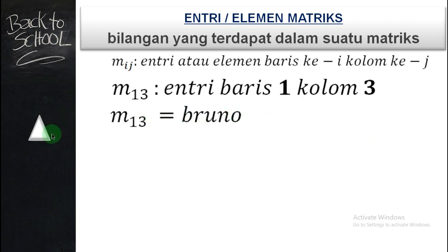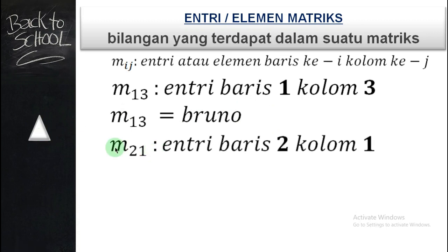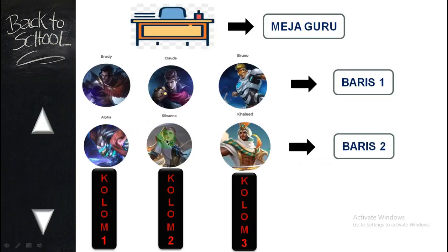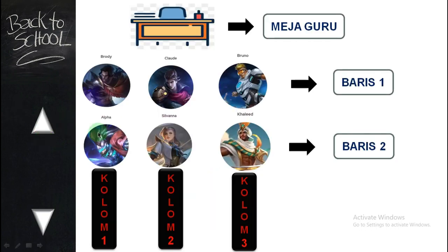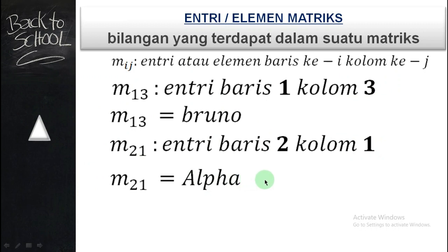Bagaimana kalau dengan M21? M21 adalah entry baris ke 2, kolomnya ke 1. Fokus pada baris ke 2. Baris ke 2 ada Alfa, Silvana, Khalid. Baris ke 2 tetapi kita lihat kolom yang ke 1. Alfa adalah baris ke 2, kolom 1. Jadi untuk M21 adalah Alfa. Kalau Alfa tadi angkanya 4: 1, 2, 3, 4. Jadi M21 sama dengan Alfa, sama dengan 4.